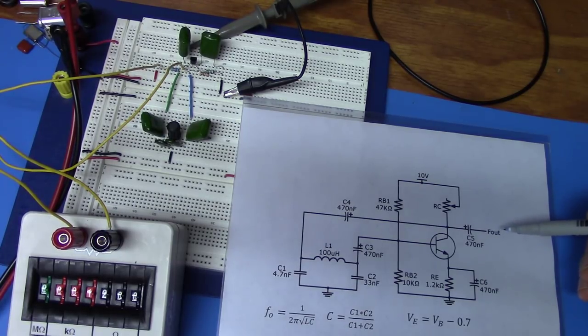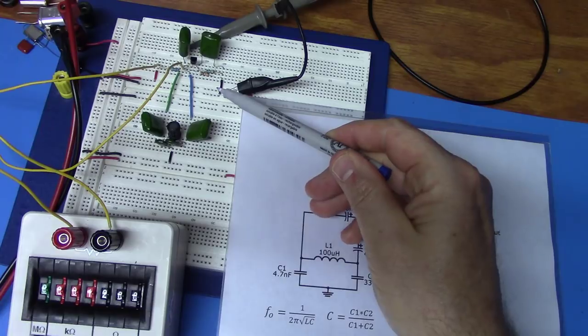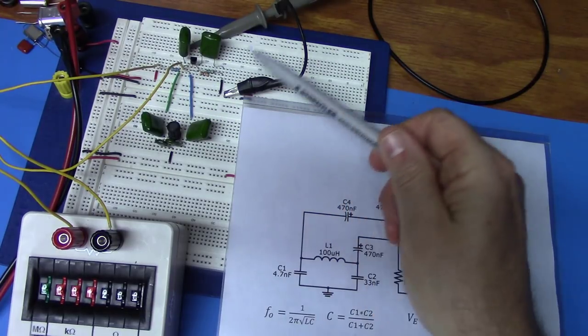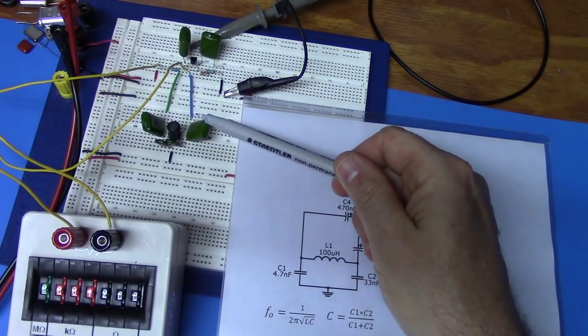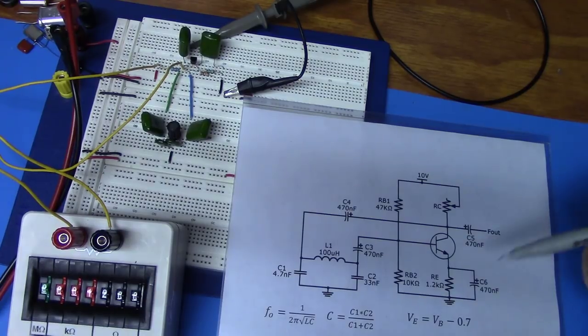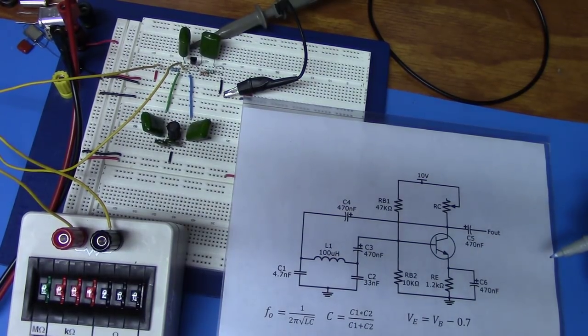We'll also be checking everything out on a breadboarded circuit, I've already built that here, and we'll look at how the Barkhausen criterion is correct most of the time, with the exception of the gain greater than one. We'll explain that as we get farther into the video. So let's go ahead and get started.